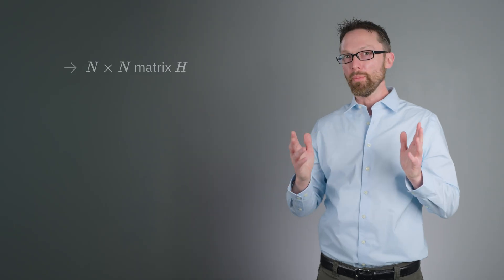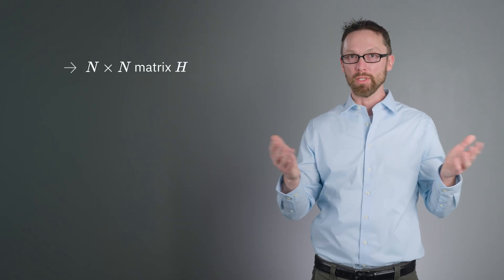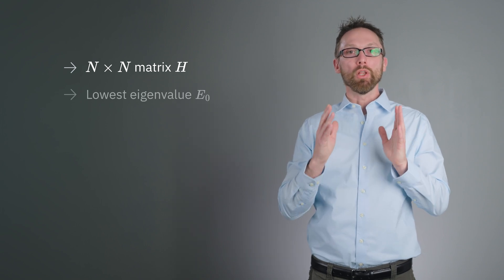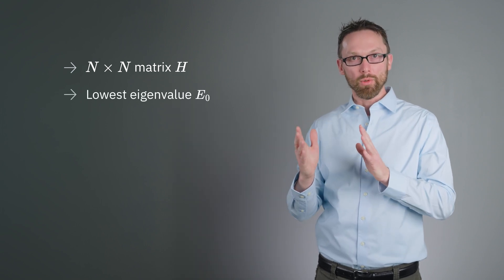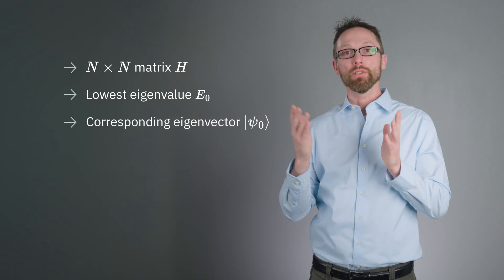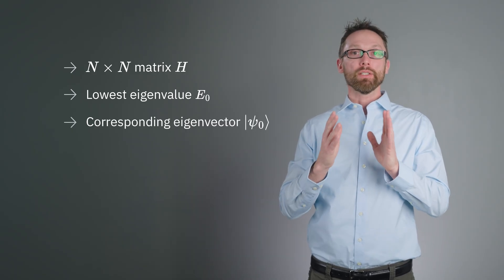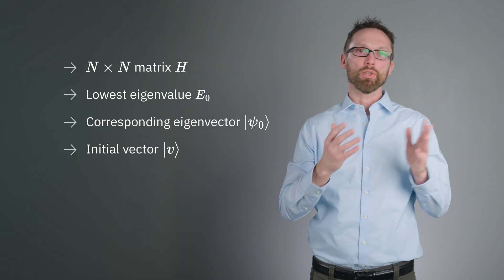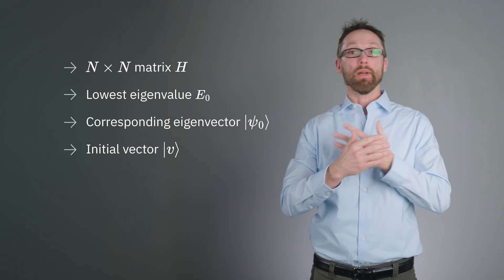So what is the Krylov method? Suppose we have a matrix H related to a scientific or business endeavor with n rows and n columns. We're interested in the lowest eigenvalue E0 and the corresponding eigenvector psi0. Let's define an initial vector V, which might be motivated by the structure of H, or might be entirely random.